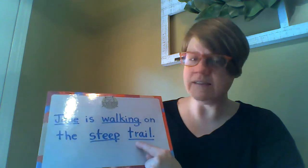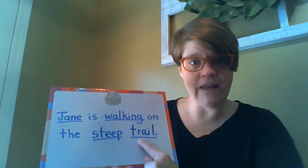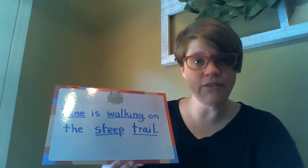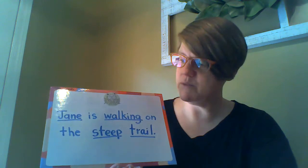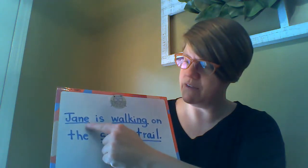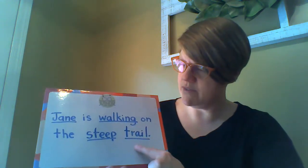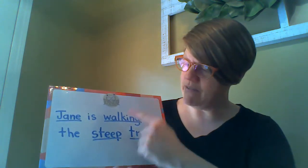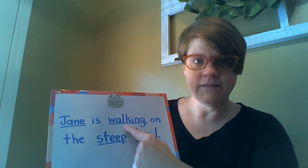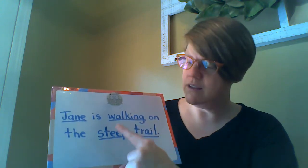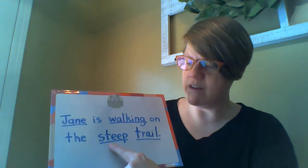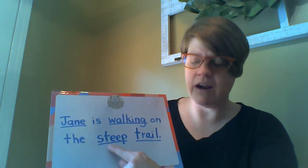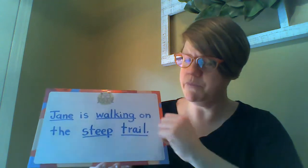'Trail' is another noun — that's a thing. So we actually have all three in this sentence: we have two nouns, we have a verb showing action, and we have an adjective because 'steep' is describing the trail.